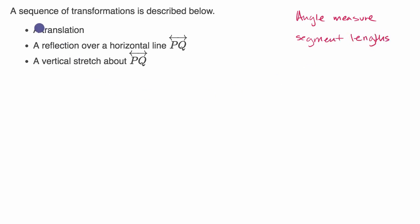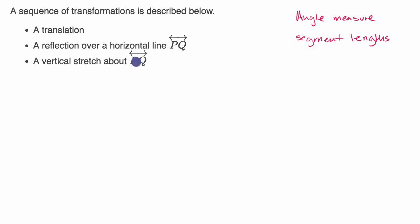Let's look at this first example. They describe a sequence of transformations: first a translation, then a reflection over a horizontal line PQ, then a vertical stretch about PQ. What is this going to do? Is this going to preserve angle measures, and is this going to preserve segment lengths?